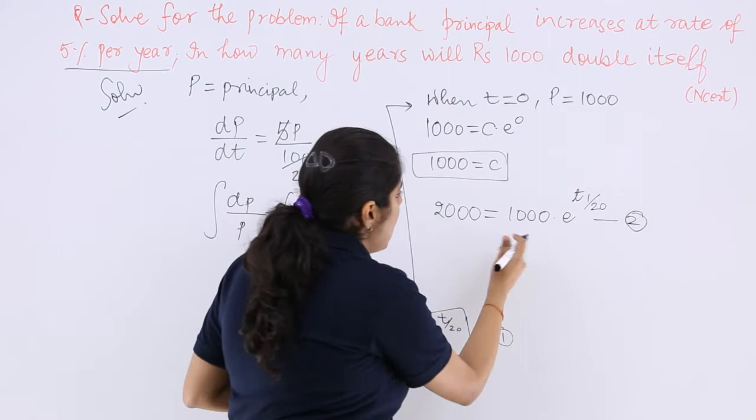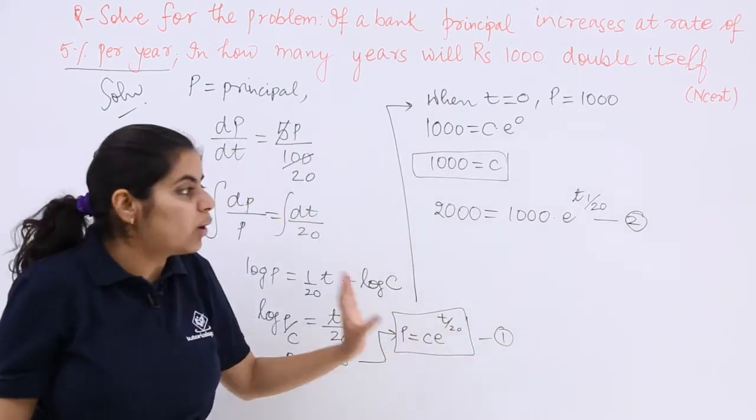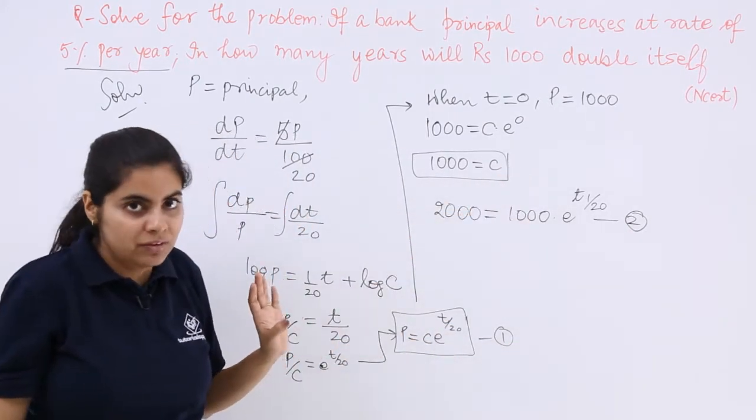Because I already know that now the time would be different. So if this is your equation number 2 and I know this is 2, this is 1, what is unknown? Time frame is unknown.